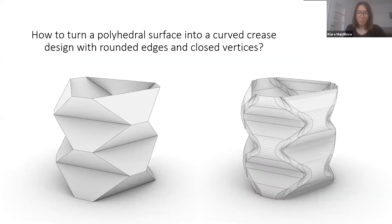So here we give one answer to the following question: how to turn a polyhedral surface into a curved-crease design with rounded edges and closed vertices. Here this is the chicken wire tessellation and we turned this into a rounded shape where we filleted the edges and folded the resulting cylinders into conical elements around the vertices.